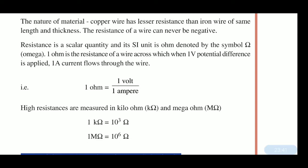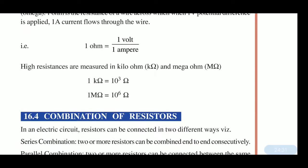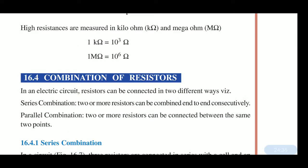The resistance of a wire can never be negative. Resistance is a scalar quantity, and its SI unit is ohm, denoted by the symbol omega (Ω). One ohm is the resistance of a wire across which when one volt potential difference is applied, one ampere of current flows — so 1 Ω = 1 V / 1 A. High resistances are measured in kilo-ohm (1 kΩ = 10³ Ω) and mega-ohm (1 MΩ = 10⁶ Ω).